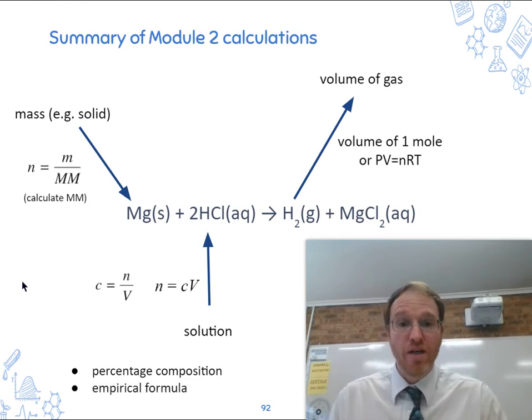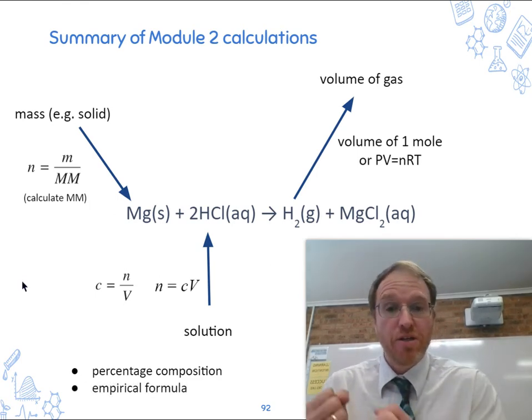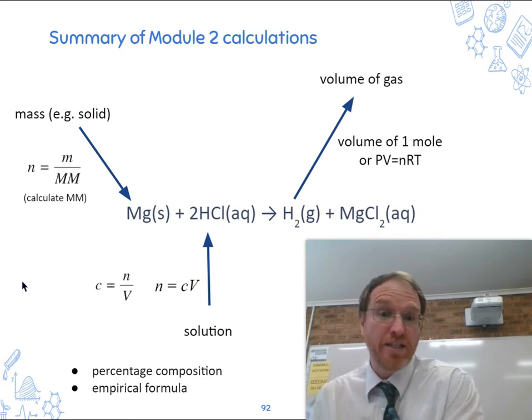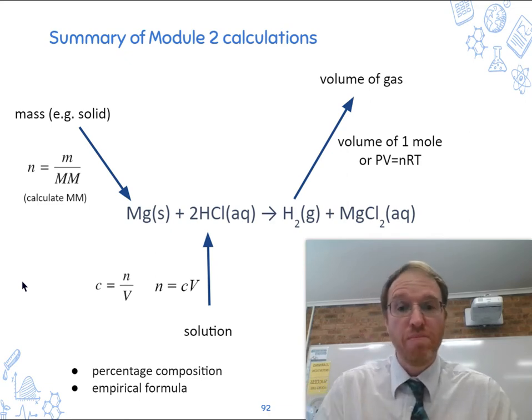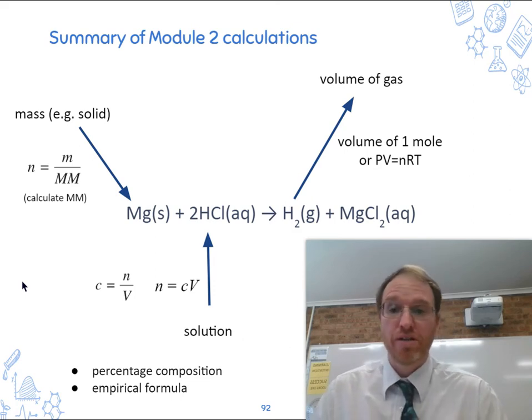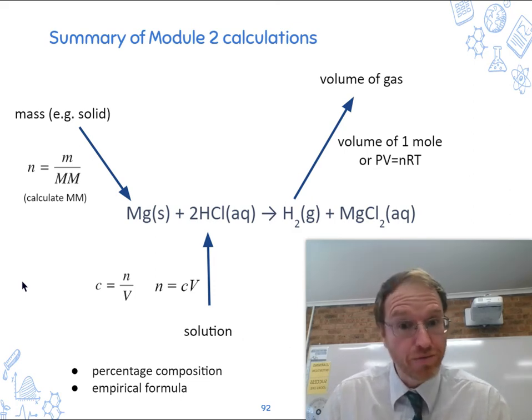Empirical formula. When we do an experiment and we measure the percentage, for example, magnesium and chlorine in a compound, we need to be able to work backwards to find the formula, the empirical formula.